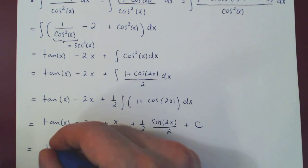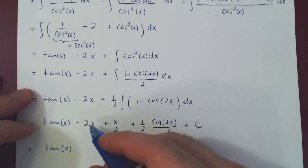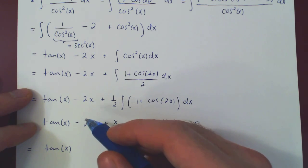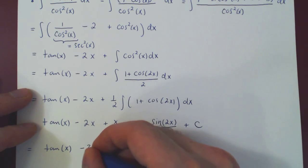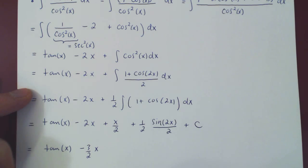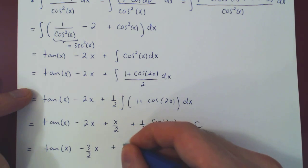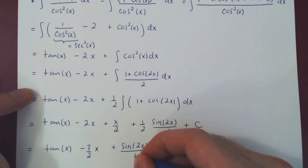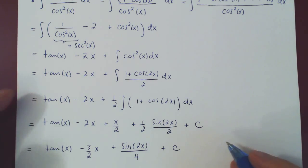Tan of x. Now we have minus 2 plus 1 half. Minus 2 is negative 4 over 2. So negative 4 plus 1 is negative 3. So negative 3 half times x. And finally plus sin of 2x over 4. And of course plus the arbitrary constant of integration. And that's it.